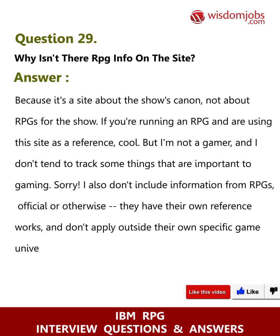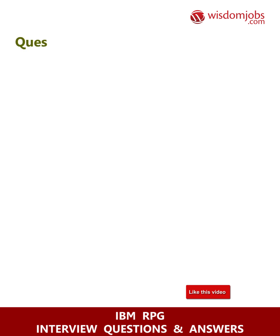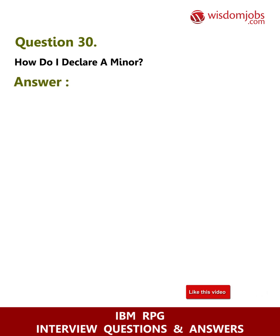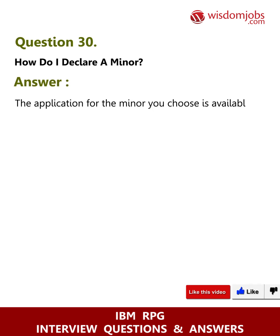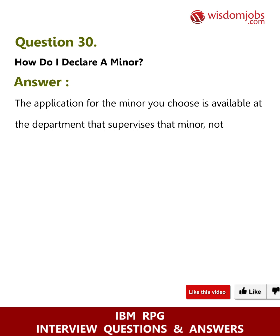Question 30: How do I declare a minor? Answer: The application for the minor you choose is available at the department that supervises that minor, not at the HPA department.